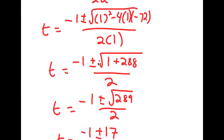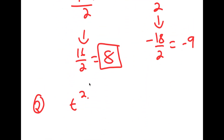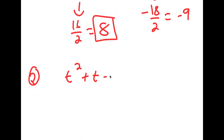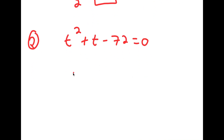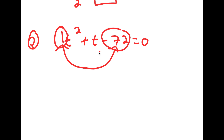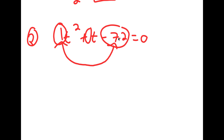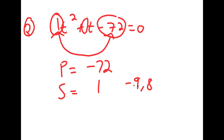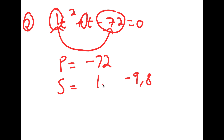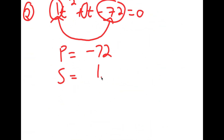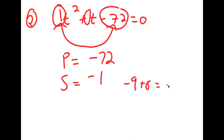Another method is the box method. For t squared plus t minus 72 equals 0, I need two numbers with a product of a times c and a sum of b. Here a is 1 and c is negative 72, so the product must equal negative 72 and the sum must equal negative 1. The two numbers that work are negative 9 and 8, because negative 9 times 8 is negative 72, and negative 9 plus 8 is negative 1.